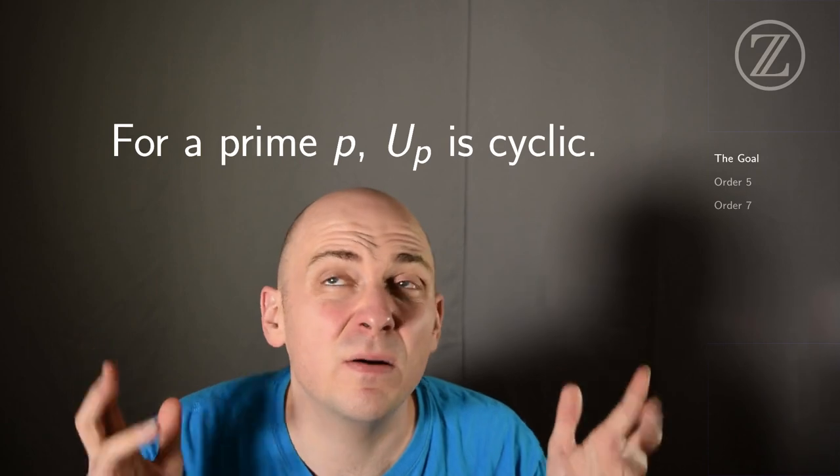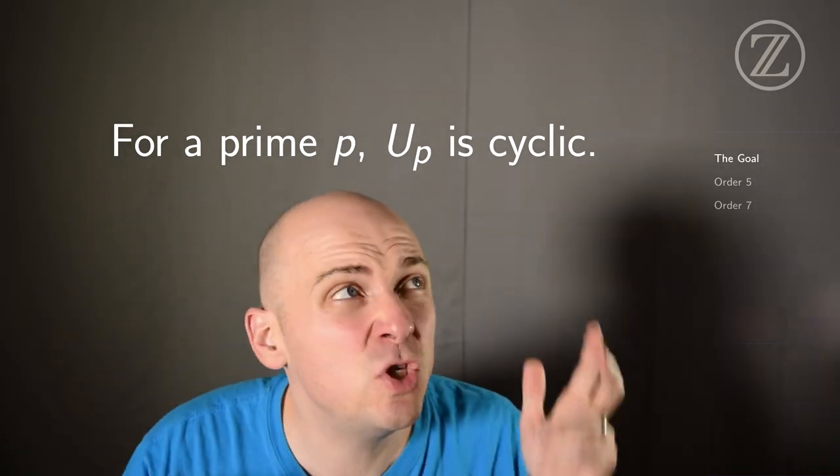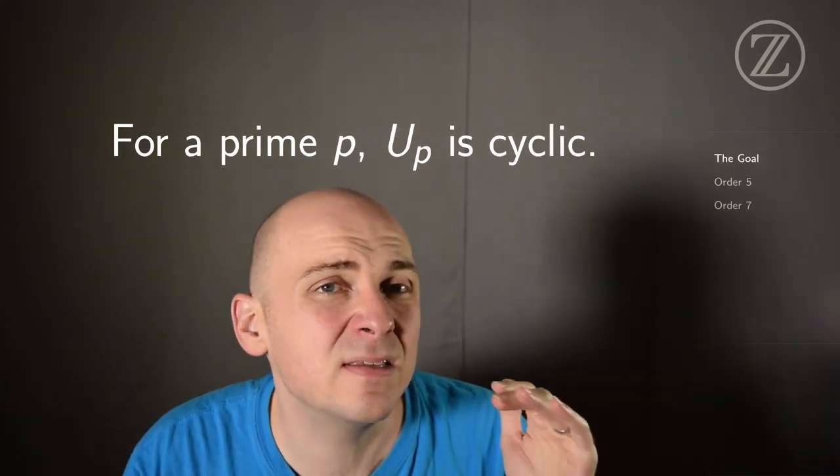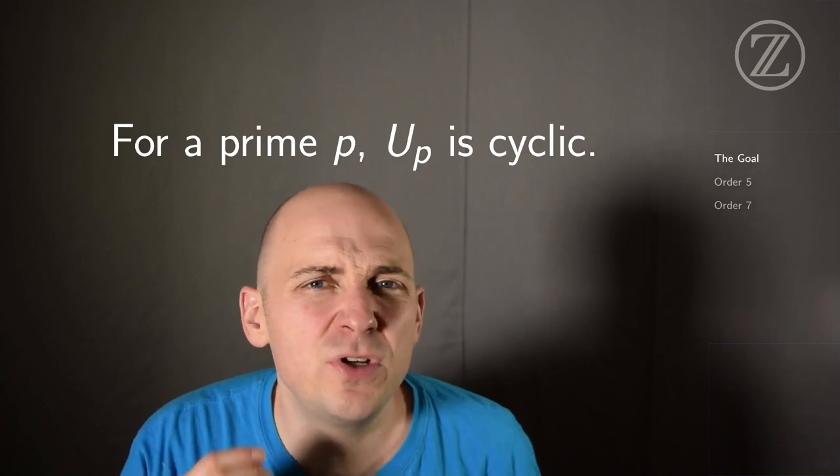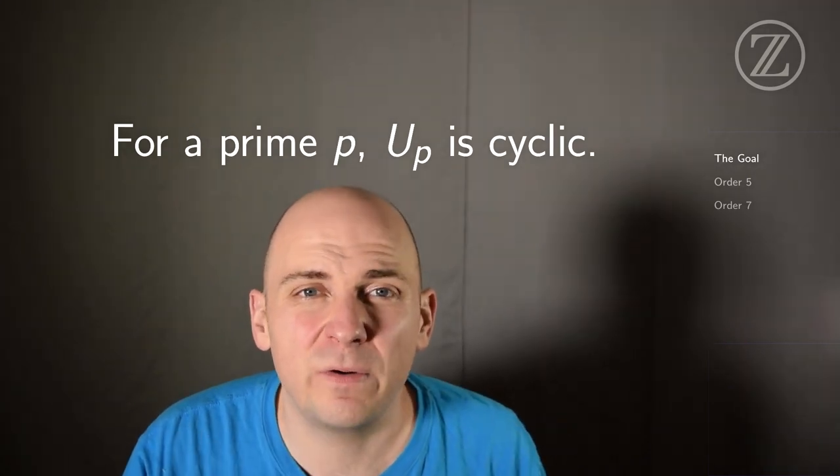In what follows, we're going to be making use of this theorem that when p is prime, U_p, the group of units mod p, is cyclic. We're going to use this to produce elements of a desired order in U_p.